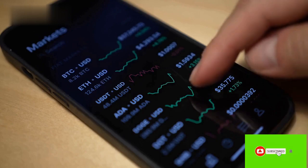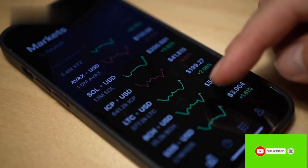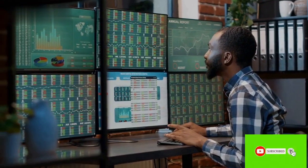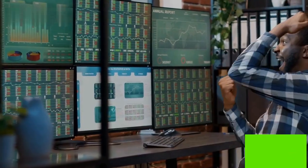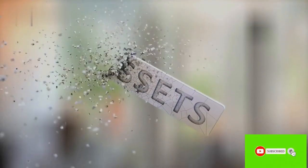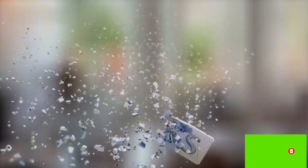3. Understanding the Basics of Investing: Stocks, Bonds, and Mutual Funds. When it comes to investing, there are three basic types of assets: stocks, bonds, and mutual funds. Each of these assets has its own unique characteristics and benefits, and it's important to understand them before you start investing.